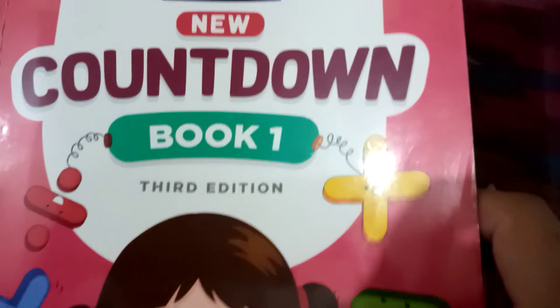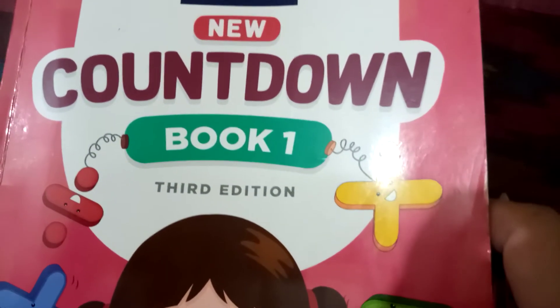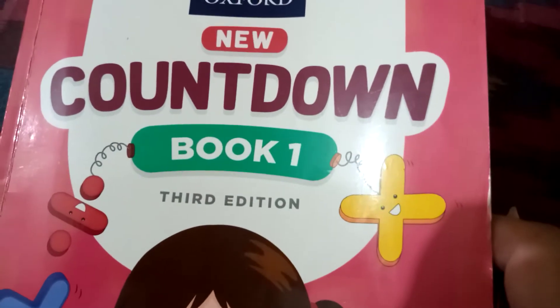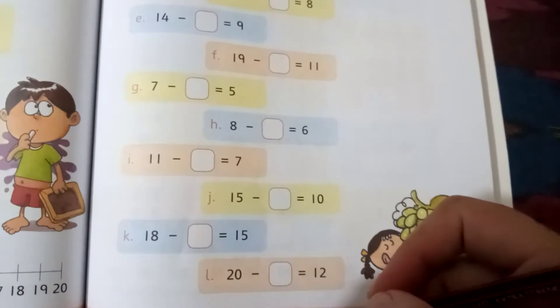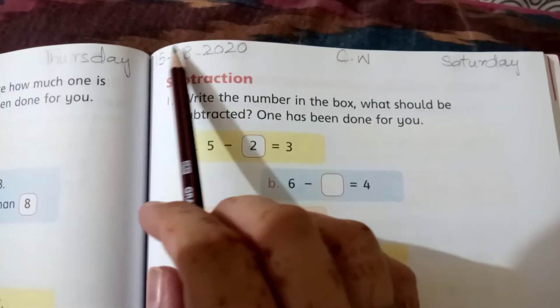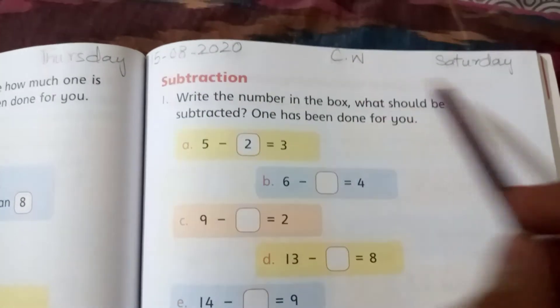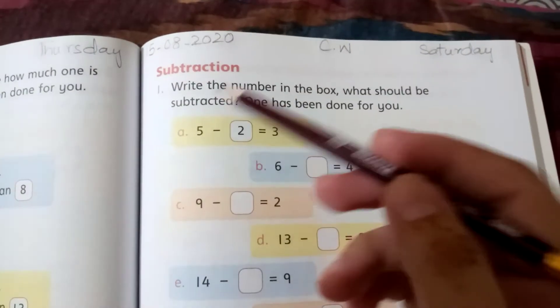Assalamu alaikum students, today we are going to start the work on Countdown Book 1. So let's take out the new page that we will start today. Page number is 83. First of all, you have to write date on this page: 15-8-2020, classwork, and day is Saturday.